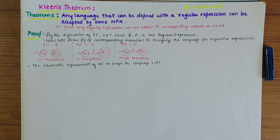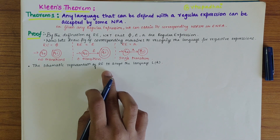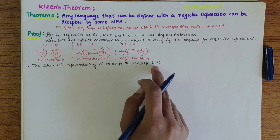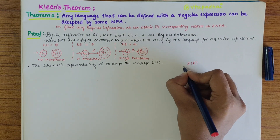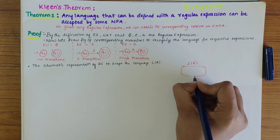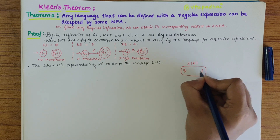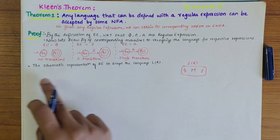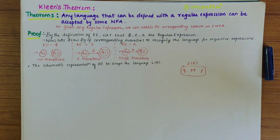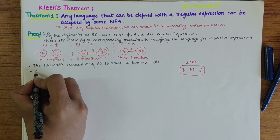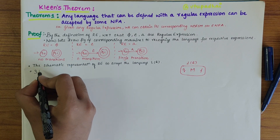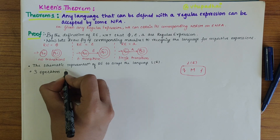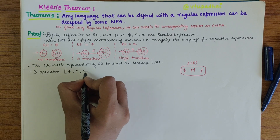This is what we have seen about the corresponding machines to recognize the language for respective expressions. Now the schematic representation of a regular expression accepts language L(R): there is a start state, a final state, and M being the machine. We know that regular expressions have three operators: plus, dot, and star.